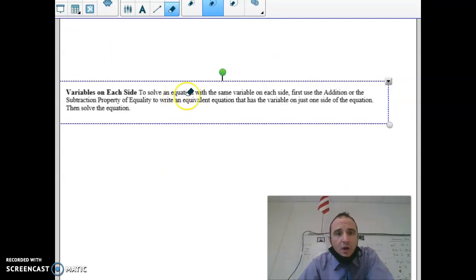So variables on both sides. To solve an equation with the same variable on each side, first use the addition or the subtraction property of equality to write the equivalent equation that has the variable on one side of the equation, then solve it.